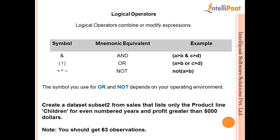Now we have logical operators. Logical operators in all subjects are always the same — AND, OR, NOT. But in the SAS environment we have different symbols. For AND we use this symbol, for OR we have two pipeline operators, and for NOT we have an exclamatory sign. You can also use the text syntax AND, OR, NOT. The symbol used depends on the operating environment — Unix will have a different sign than Windows.